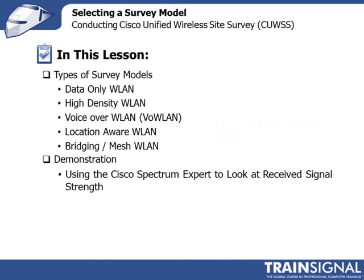We're going to step through each of those survey models, starting with the data-only wireless LAN and going to a high-density deployment — lots of people, lots of transmissions, lots of high throughput. Then we're going to talk about voice over wireless LAN, location aware using Wi-Fi RFID tagging, wireless LANs for bridges and mesh networks, and finish up with a demonstration using the Cisco Expert tool to look at receive signal strength.